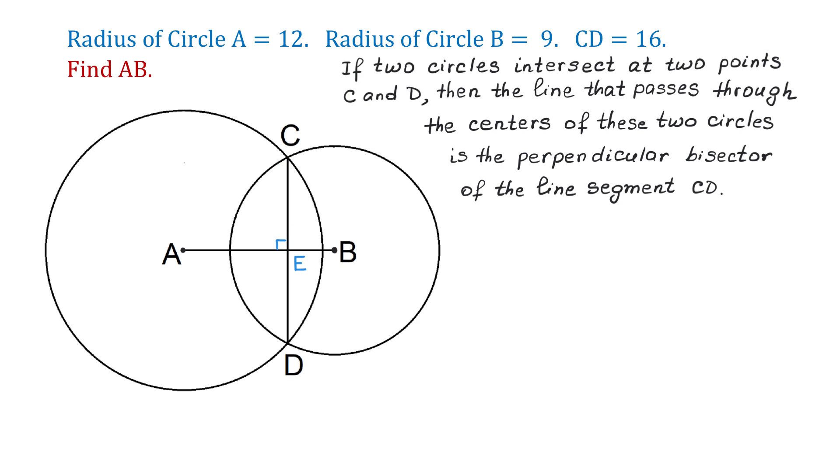Then we can say that CE is equal to DE, and each has the length of 8 units. Now, to find the length AB, first we will find AE, then BE, then we will add them together. So then, let's start with AE.